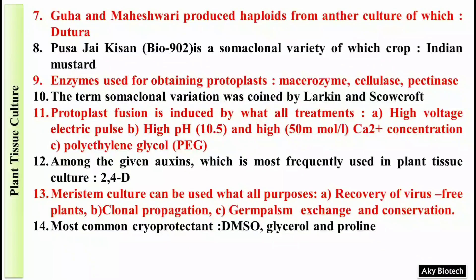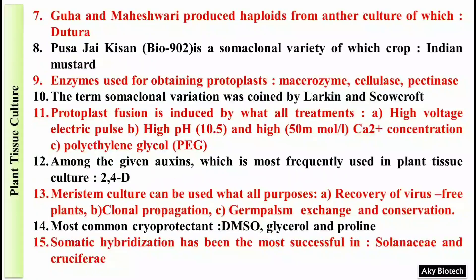Question 14: Name some cryoprotectants. These are DMSO, glycerol, and proline. Question 15: Somatic hybridization has been most successful in two families — Solanaceae and Cruciferae.